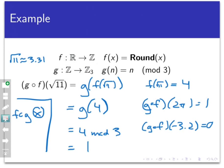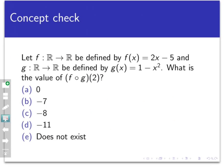So let's have a concept check here to see how well you're acquiring this idea. Let f be the function from the real numbers to the real numbers, defined by f of x equals 2x minus 5. And let g also be a function from the real numbers to the real numbers, defined by g of x equals 1 minus x squared. So the question here is, what is the value of f circle g of 2? Take a look at the possibilities below, and pause the video and vote.